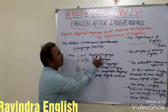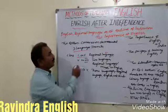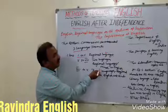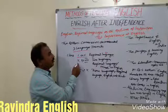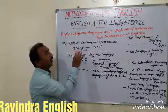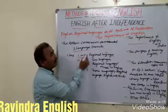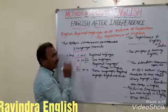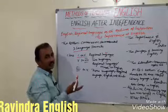Class 1 to 5th — regional language, that means mother tongue. From 5th to 8th — two languages: regional language and Hindi or English, meaning mother tongue and Hindi or English. The Kothari Commission recommended this three language formula: 1 to 5th regional language, 5th to 8th mother tongue and Hindi or English — two languages.